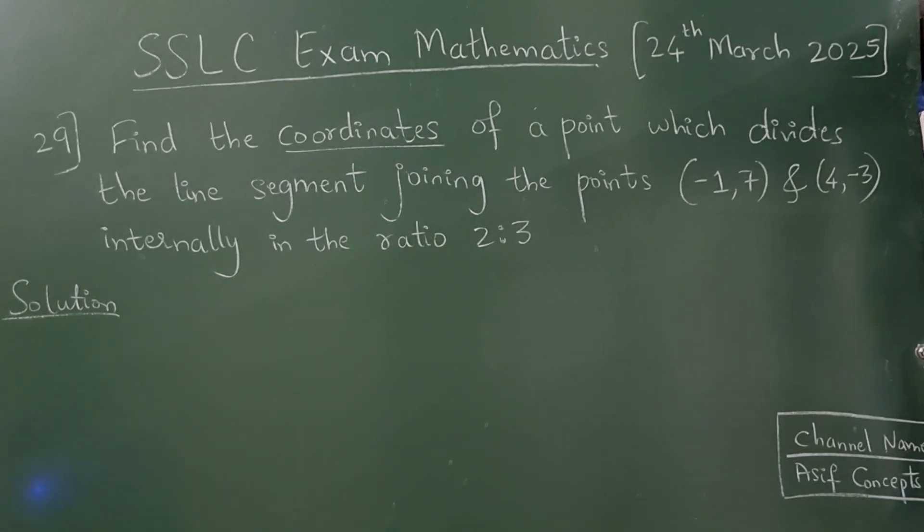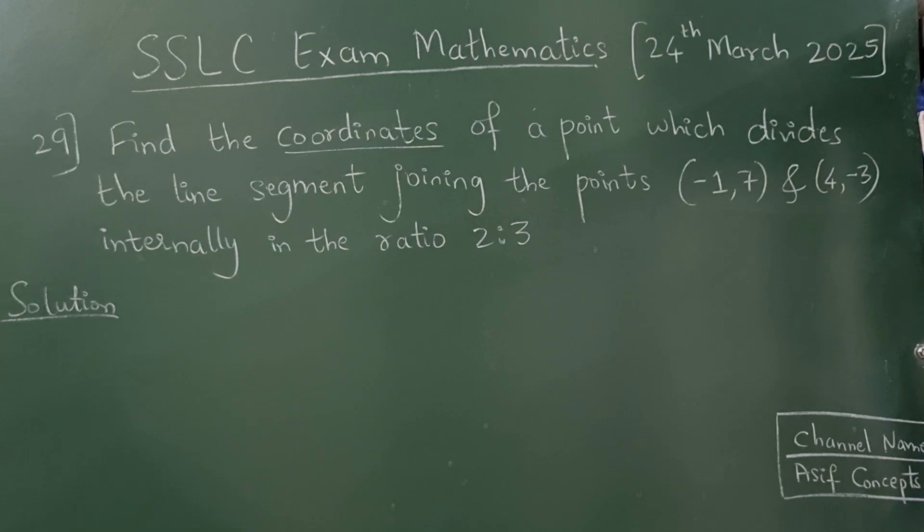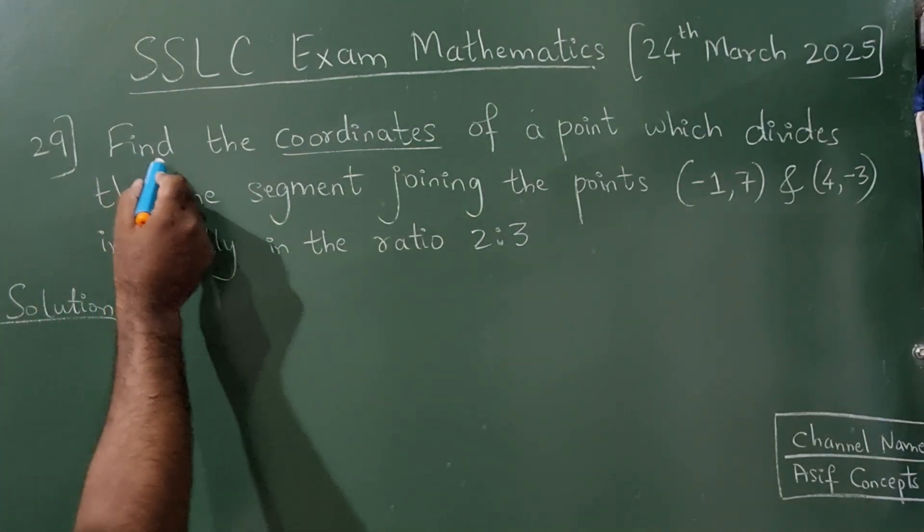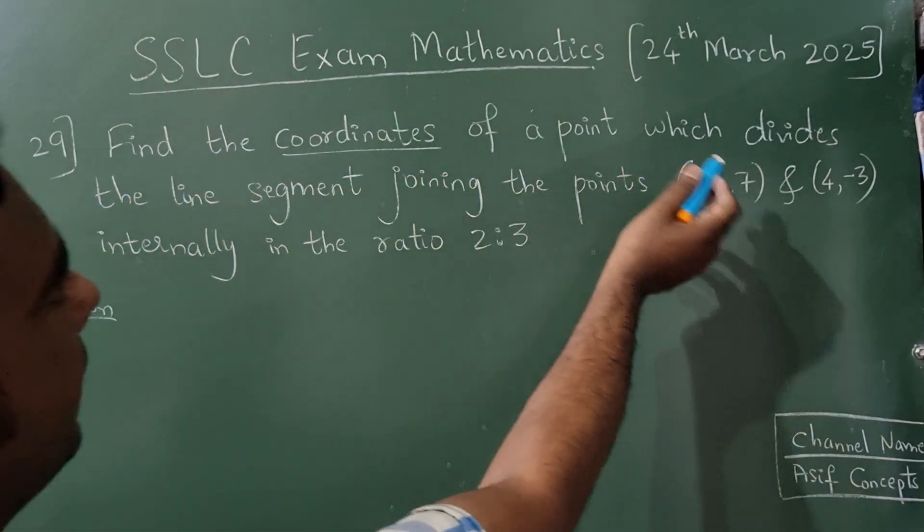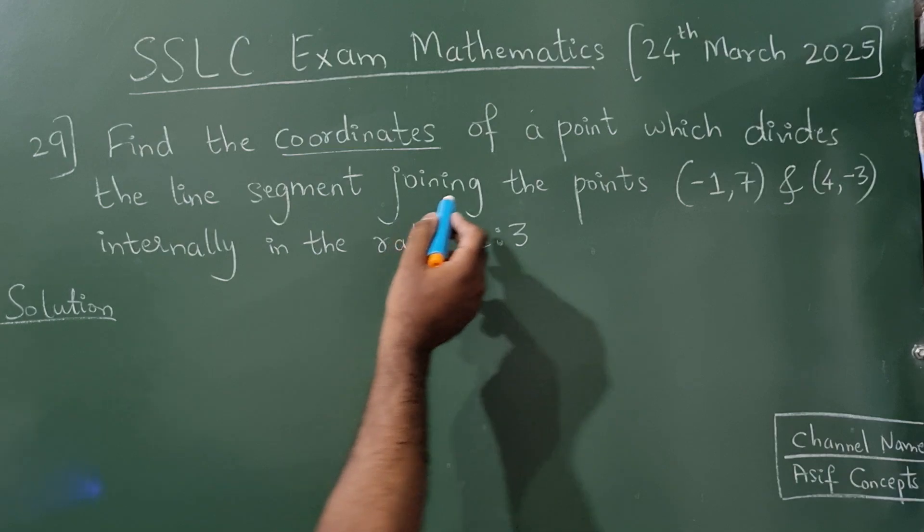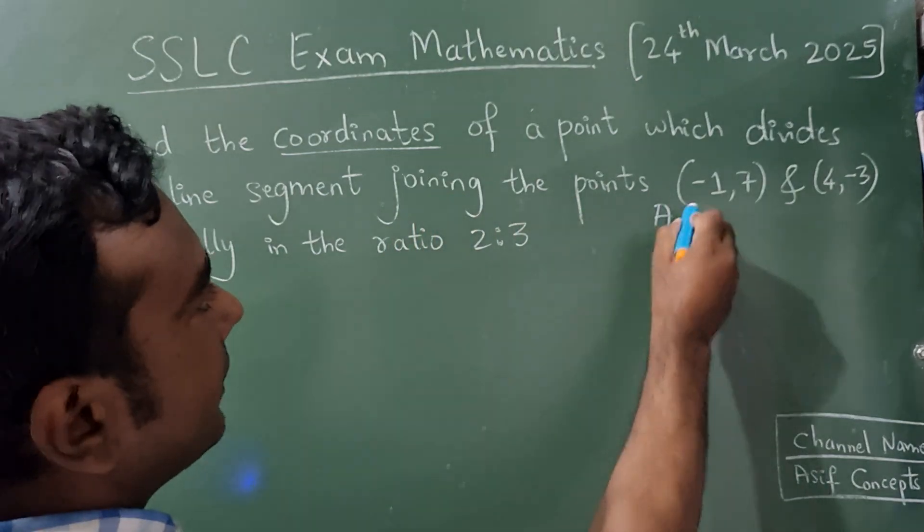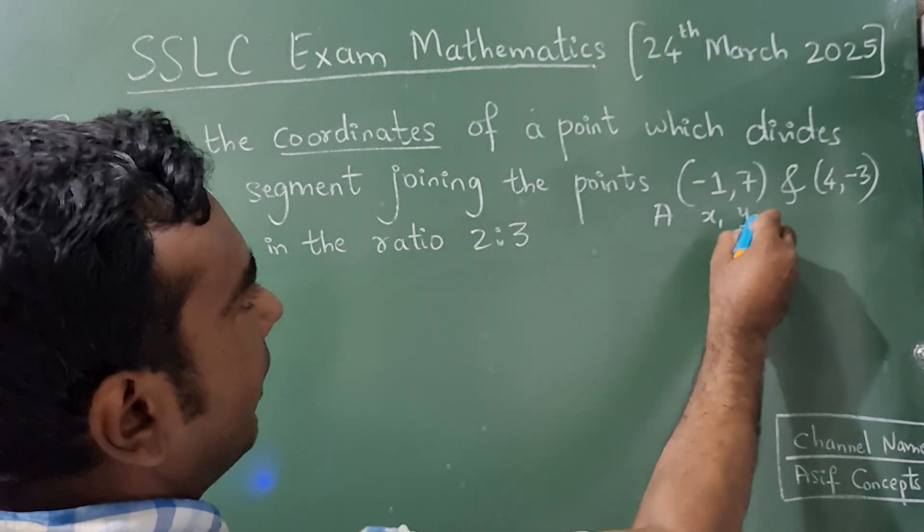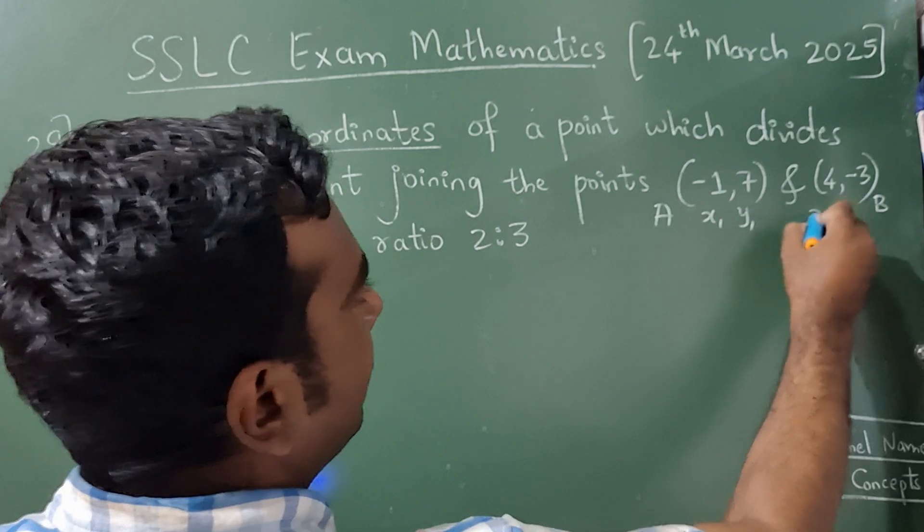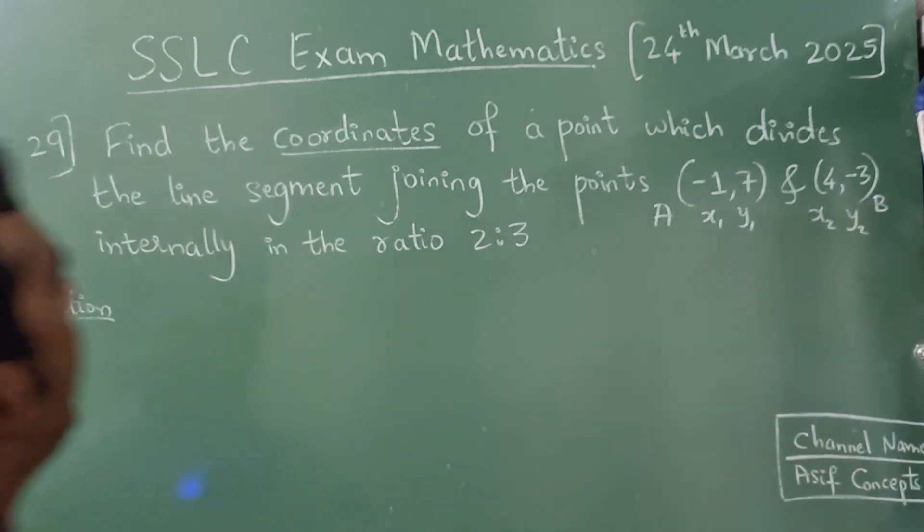This question was asked in exam for three marks. Question number 29: Find the coordinates of a point which divides the line segment joining the points. Consider this as A (x1, y1), this as B (x2, y2), internally in the ratio m1:m2.